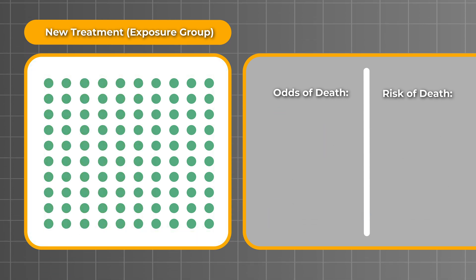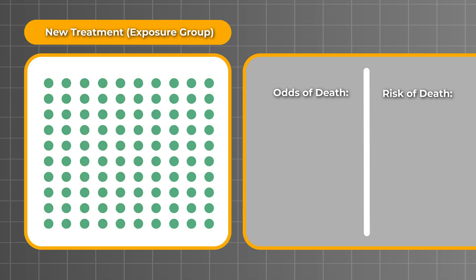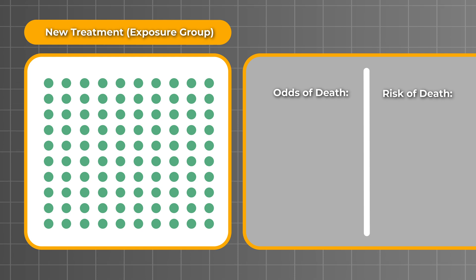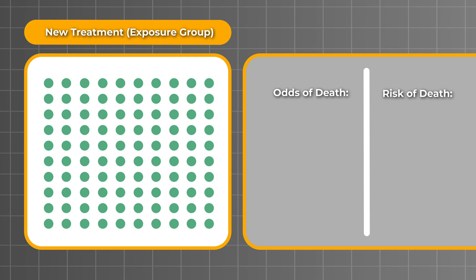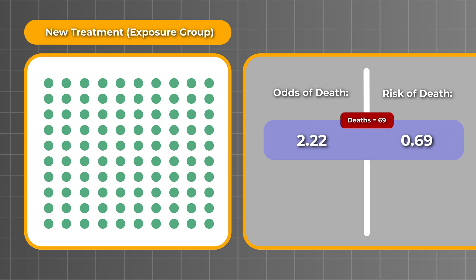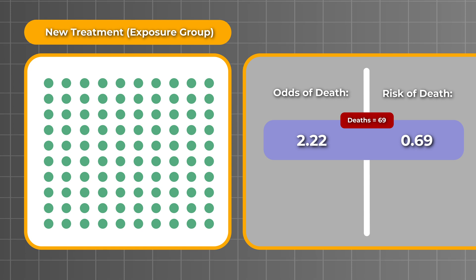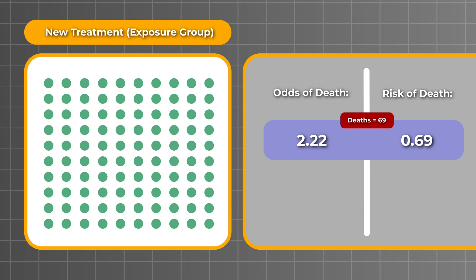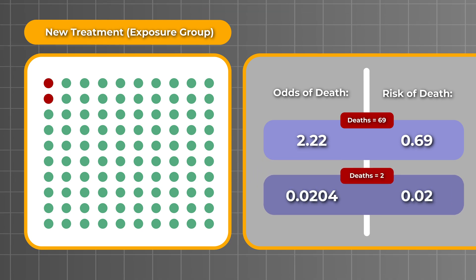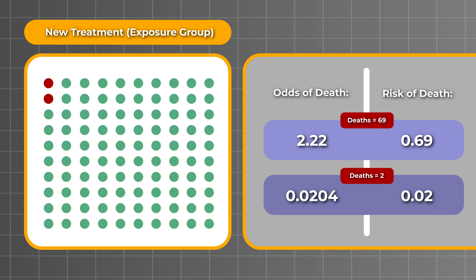You'll also notice that the difference between risks and odds becomes more pronounced when the event is common. So, for example, with 69 out of 100 deaths, the difference between risks and odds is pretty big. But if fewer people died, say just 2 out of 100, the risk and odds would look almost the same.